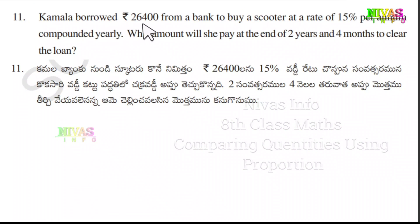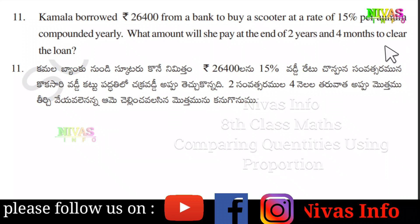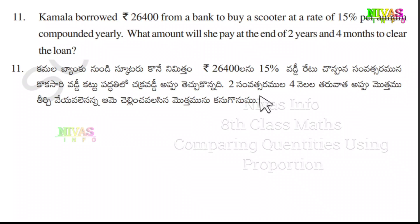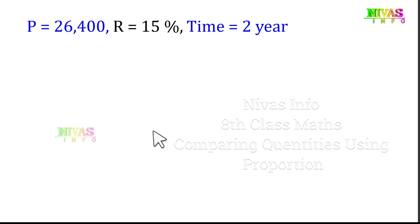Question number 11. Kamala borrowed Rs. 26,400 from a bank to buy a scooter at a rate of 15% per annum compounded yearly. What amount will she pay at the end of 2 years and 4 months to clear the loan? Here the compound interest is compounded yearly, at 15% rate, on a principal of 26,400.